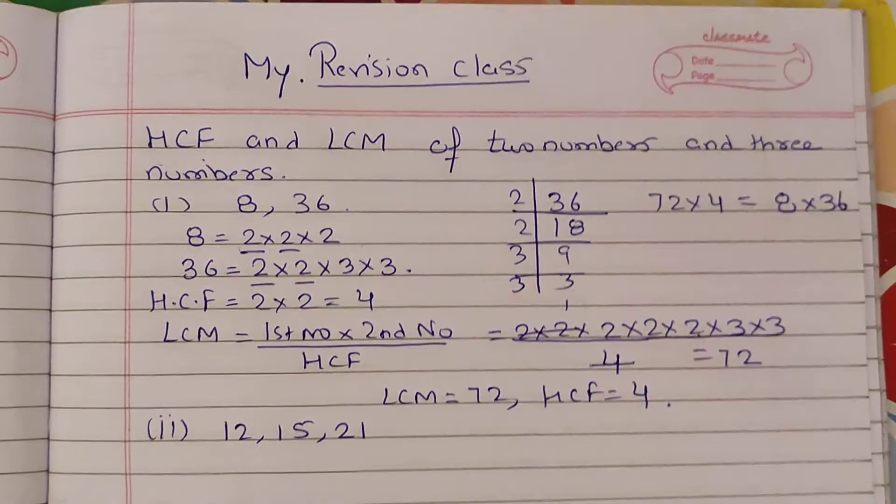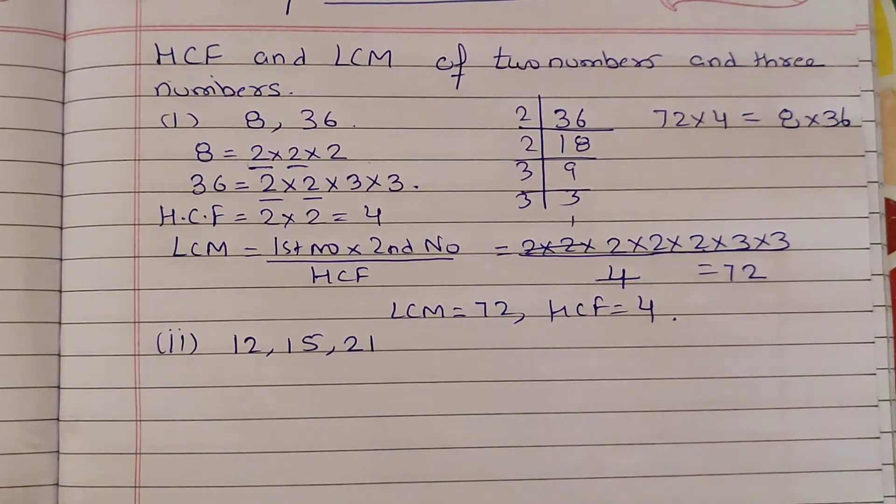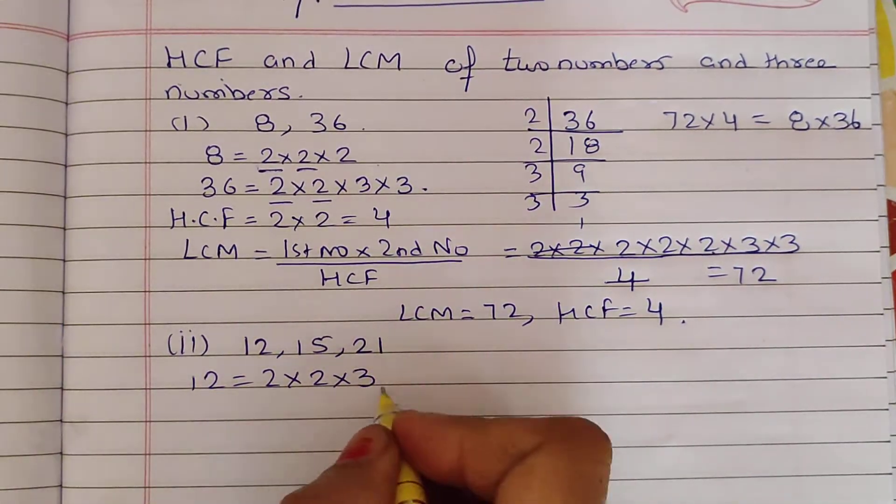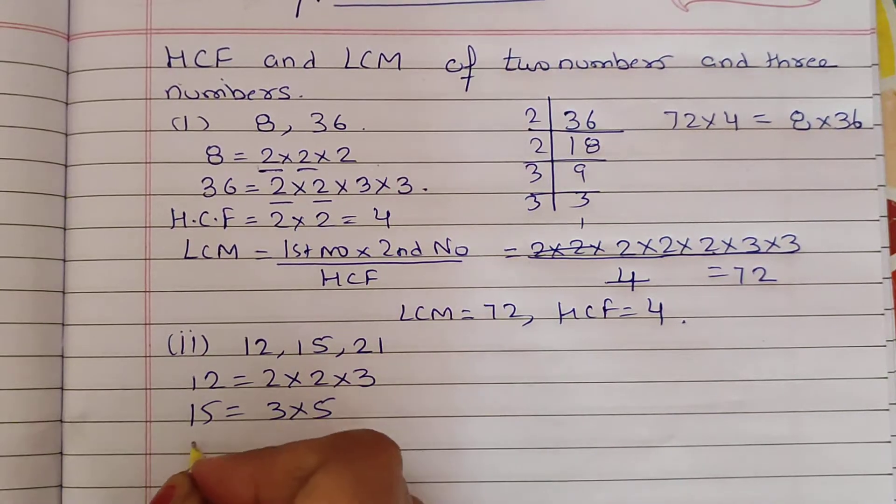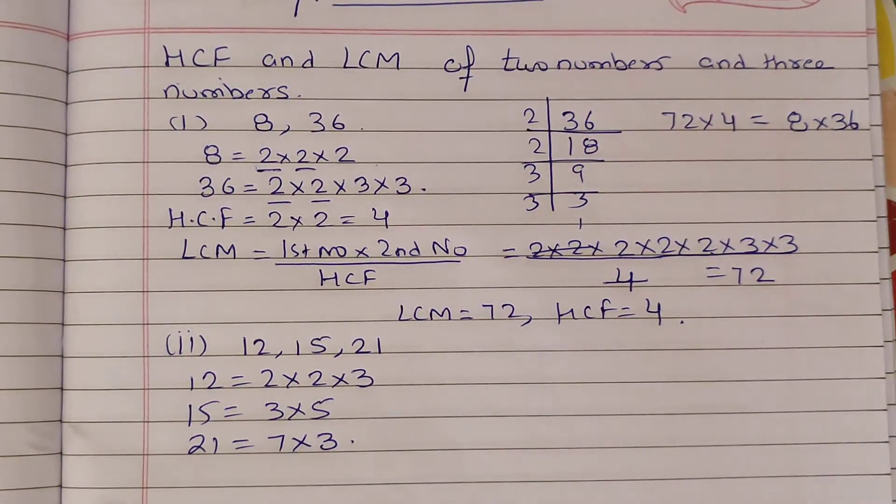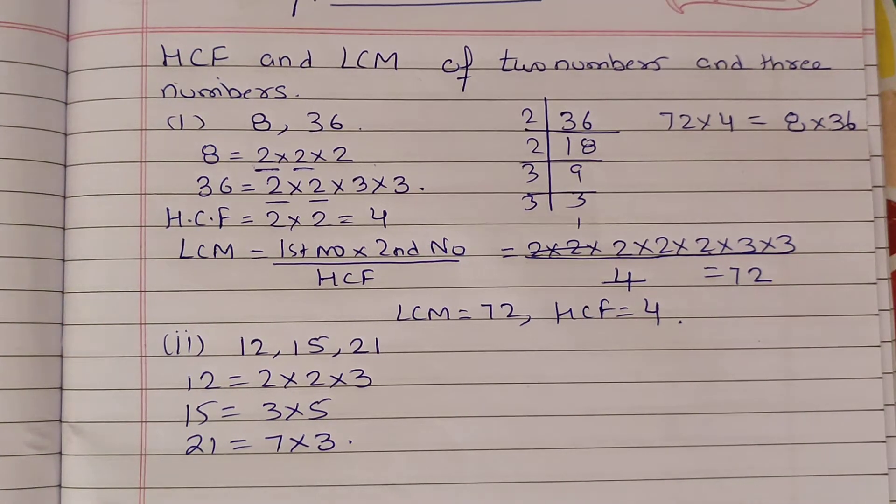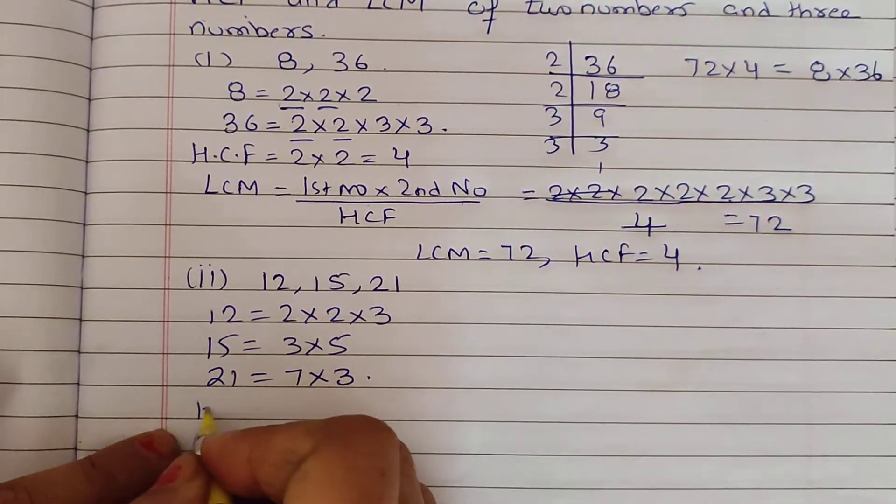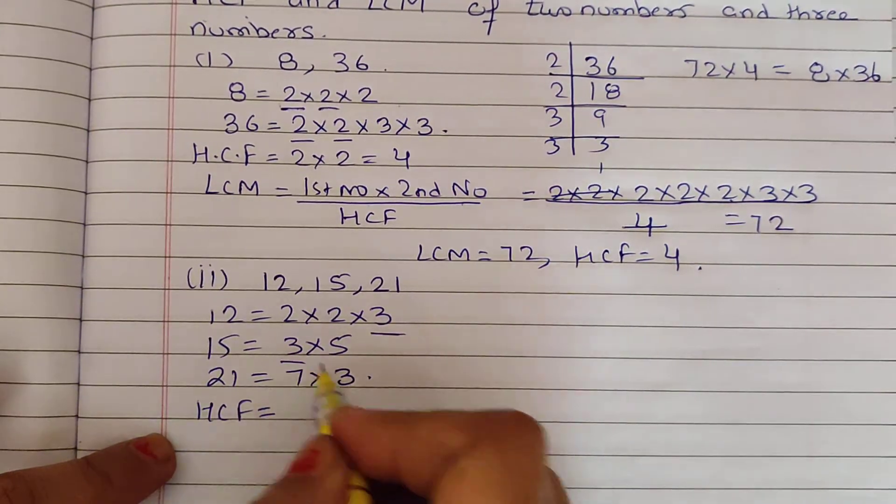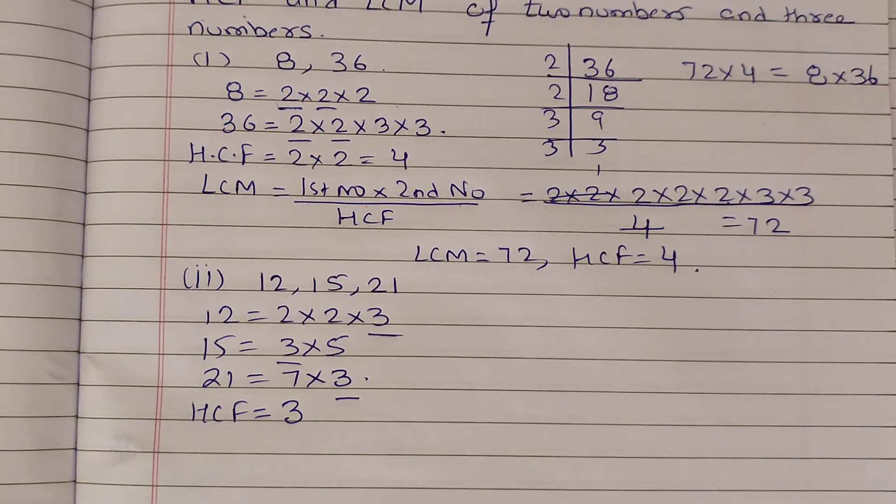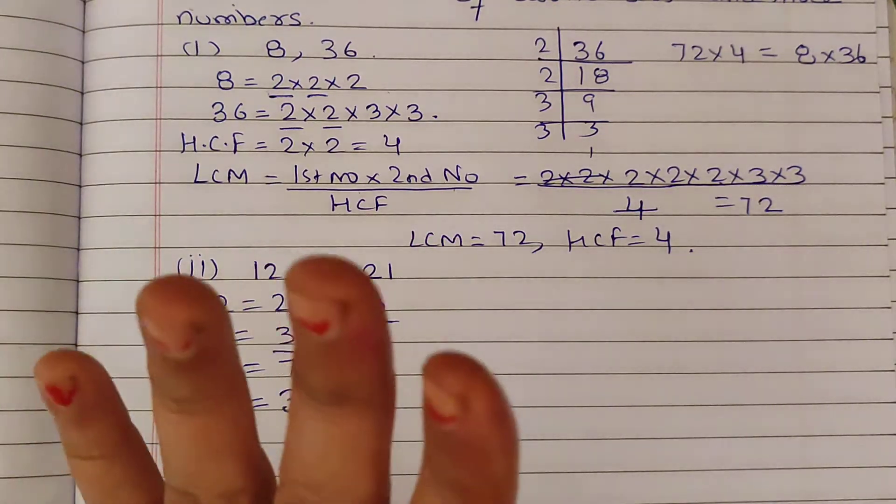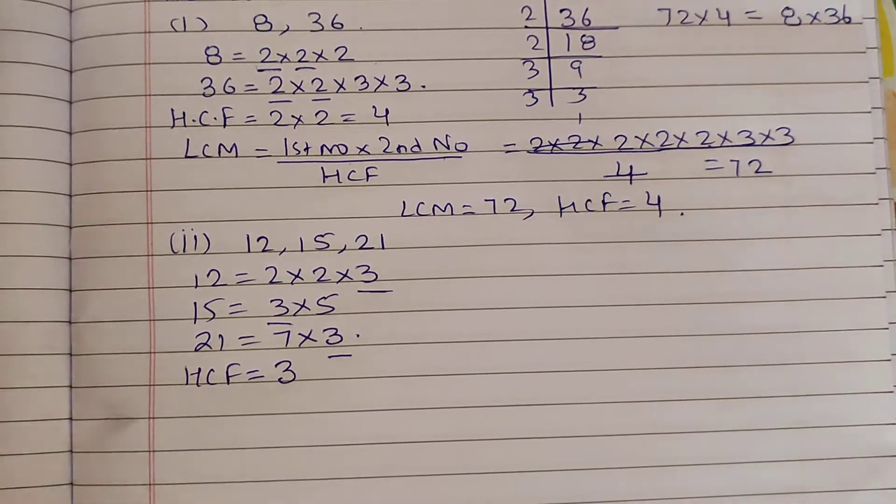Now we proceed to when we have three numbers, then what are we going to do? Students, first of all, we will do the same method. If there are any common numbers, you will never write zero. You can write one, and you will never write one. Now we will see how we start LCM.